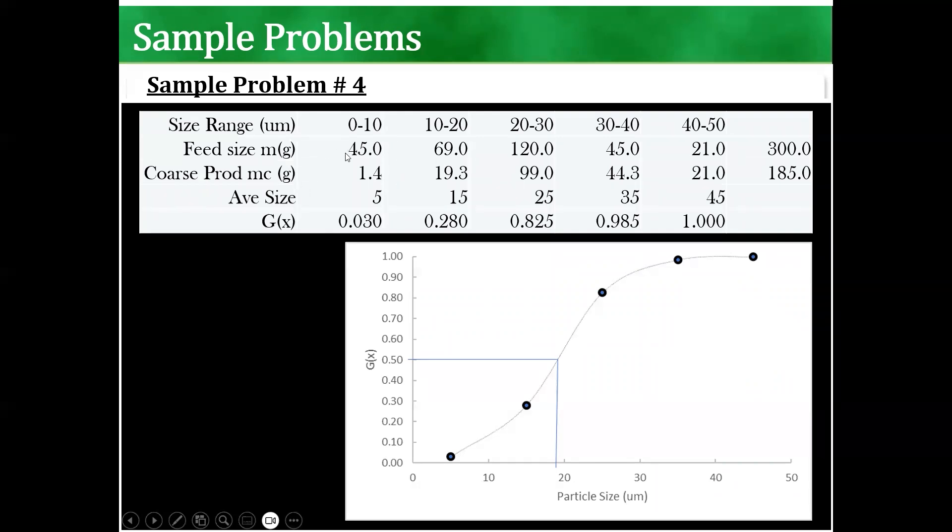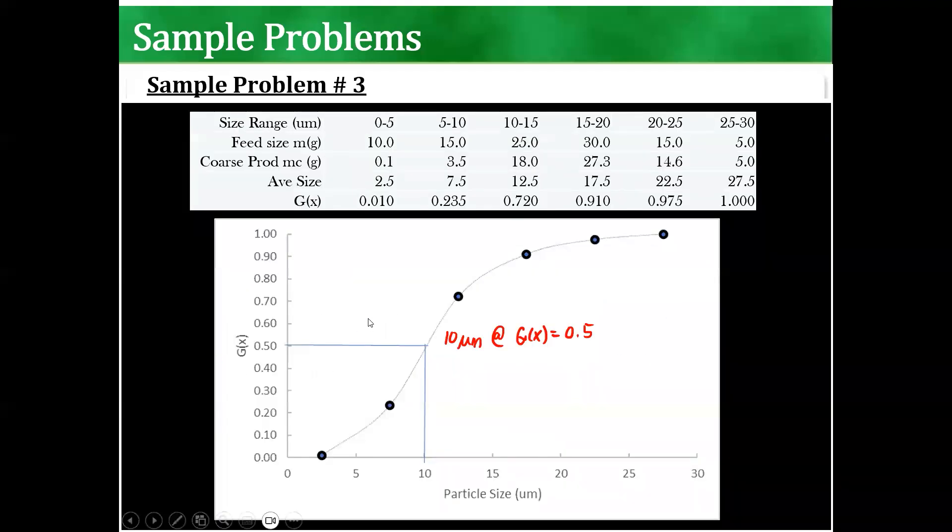And then in here, I just already added the feed size and the coarse product. So in order to solve for the efficiency, again, the formula that we have is MC over M.